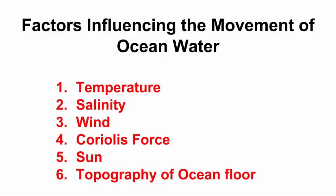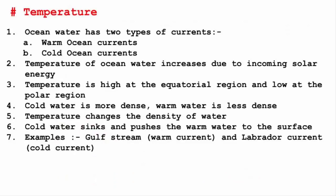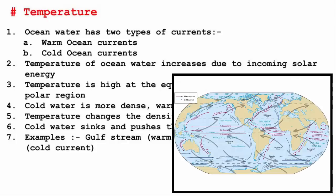In this video, we are going to look at some factors that influence the movement of ocean water. The first one is temperature. When we say temperature of ocean water, the ocean water can either be warm or cold. In other words, warm currents and cold currents.